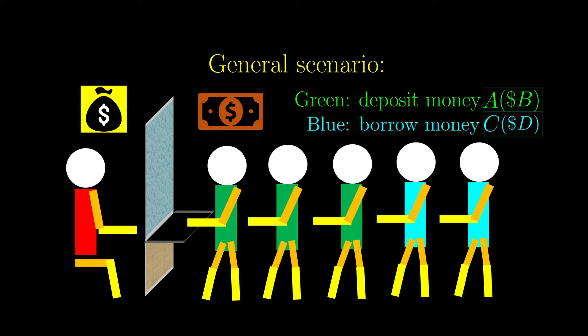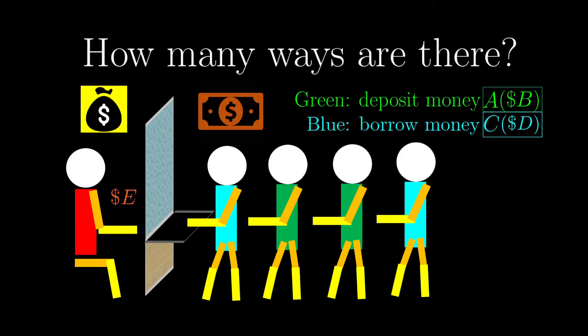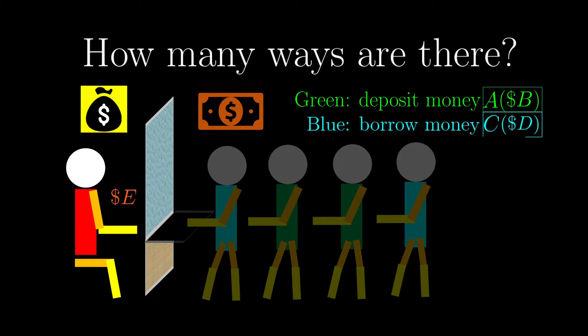That means if at some point the bank does not have any cash, the next person in line cannot be borrowing money. You should have prevented it from happening in the first place. The question is, under these constraints, how many ways there are to queue up these customers?